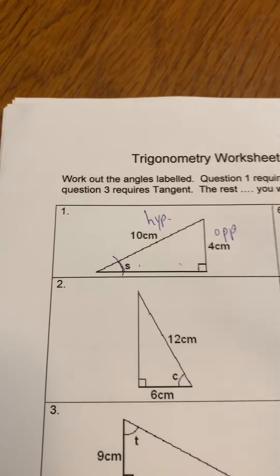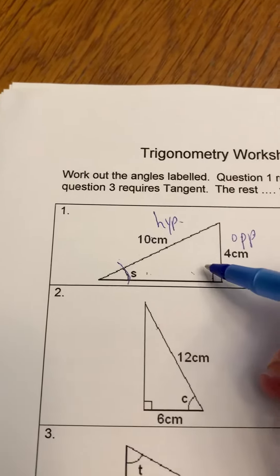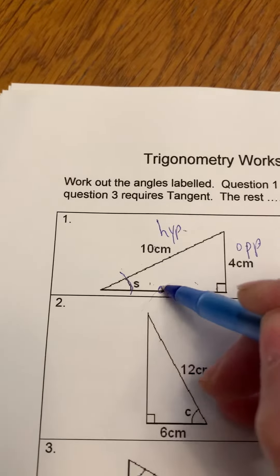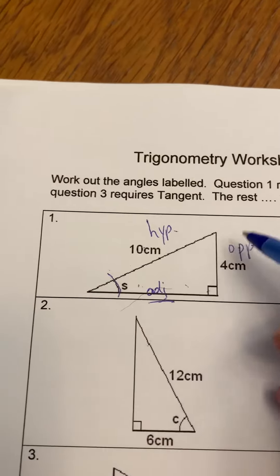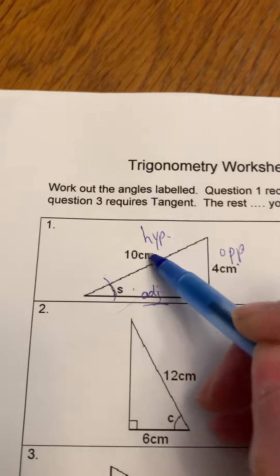So the first thing you're going to do when we practice this before was labeling the triangle. So this would also be the adjacent side, but you can see we have no measurement there. We only have an opposite side and a hypotenuse.